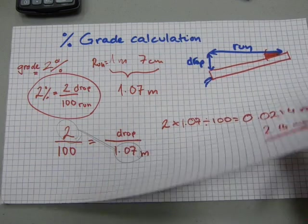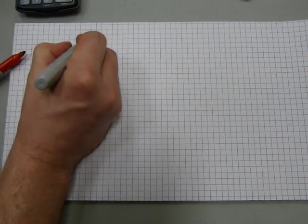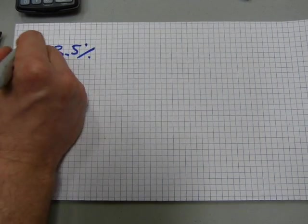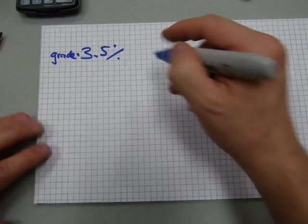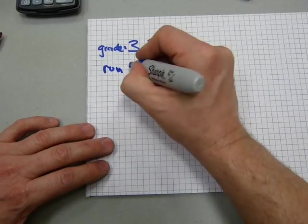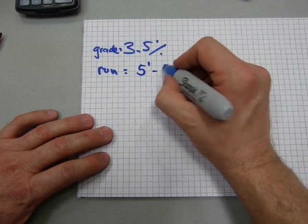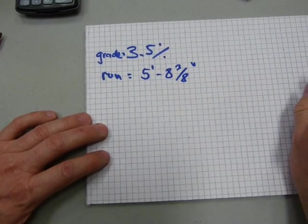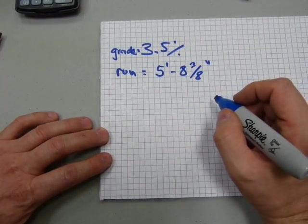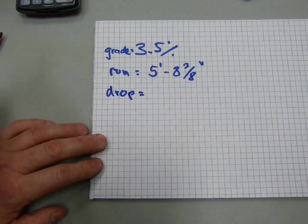Let me show you another one with feet and inches. Say a pipe has a grade of 3.5%, that's the grade, and the run of a pipe is 5 feet, 8 inches and 3 eighths. We need to calculate from grade and run, we need to calculate the drop.